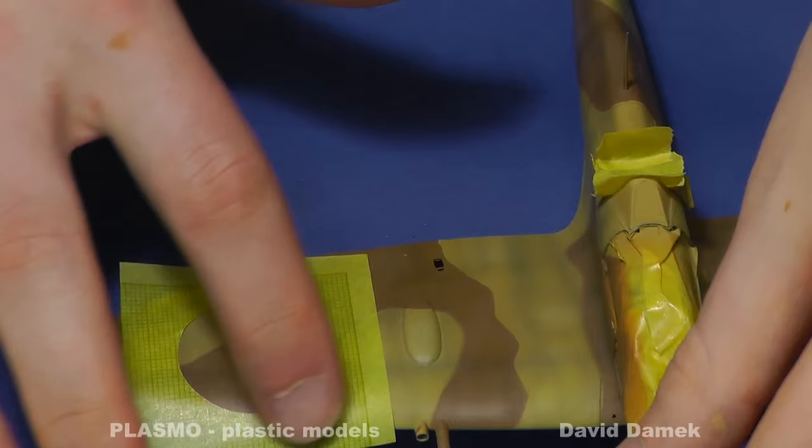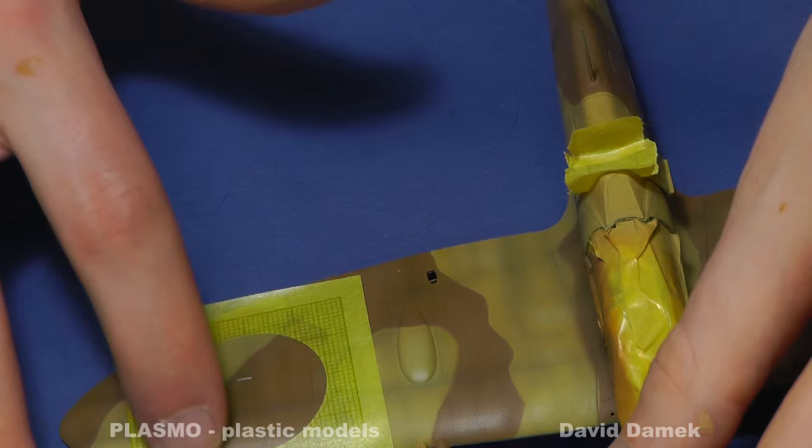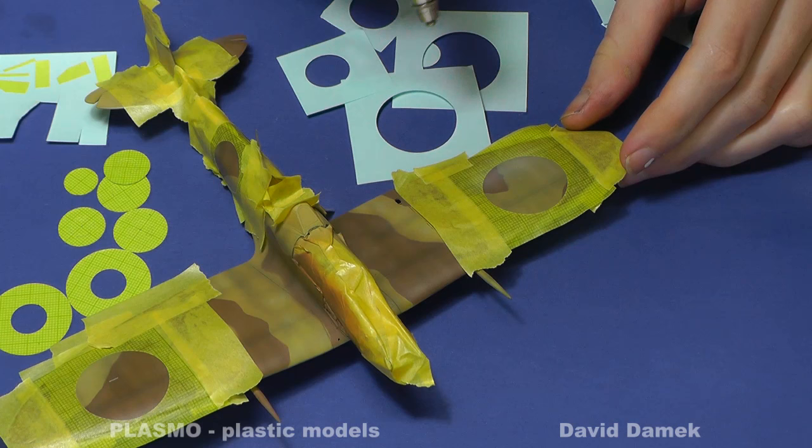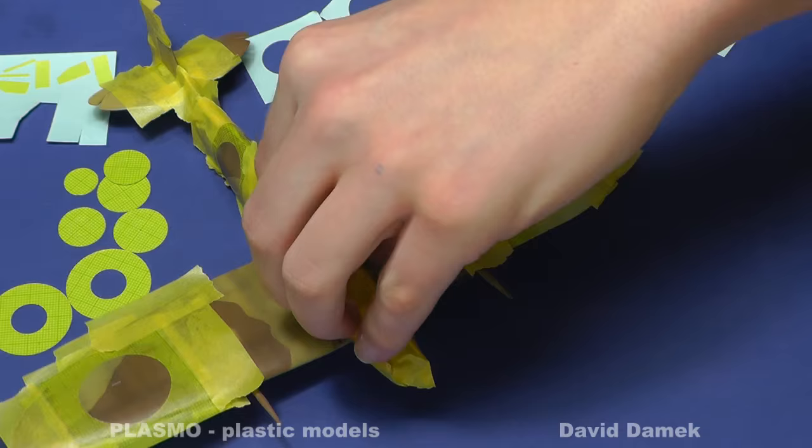Then you have to smooth the edges so the paint will not get under the mask. Since I have a two-color camouflage, it is necessary to dampen the transition with white color. White color is also suitable as a foundation for all other colors.